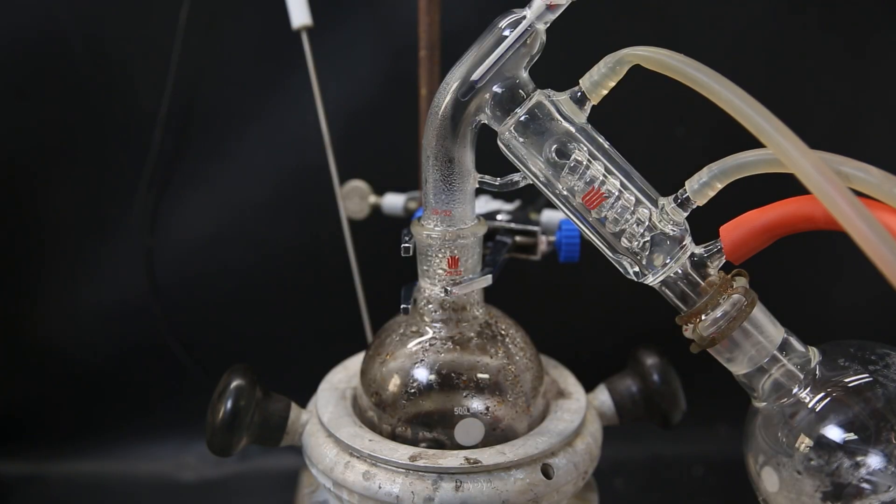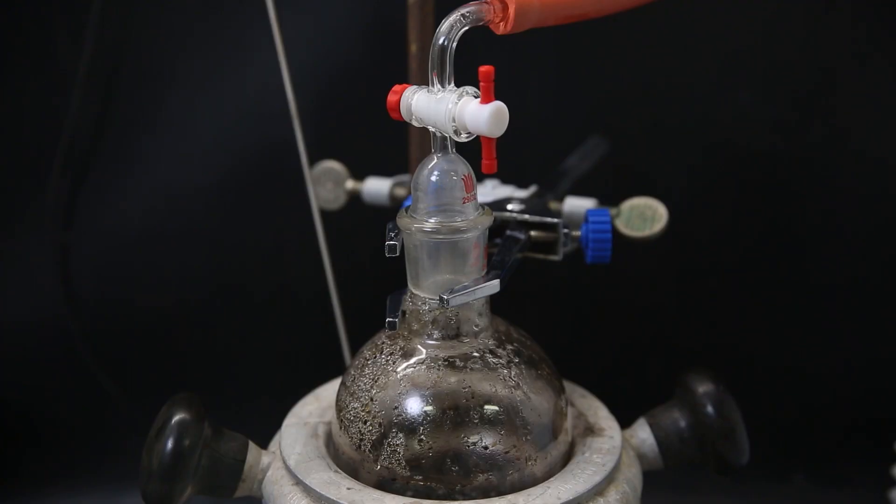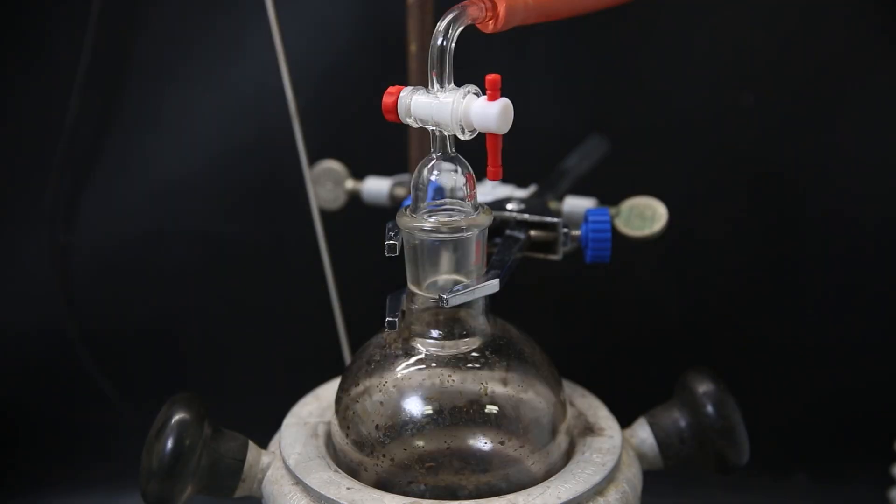I then take the filtrate and distill off all of the methanol. But afterward, it is still wet from residual water. So I remove the short path and attach a gas adapter. I then pull a strong vacuum and heat it lightly to remove any remaining water and methanol. When it is done, a dry black solid is left behind.